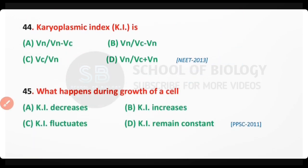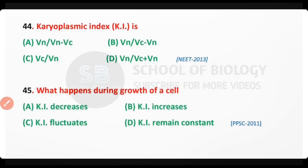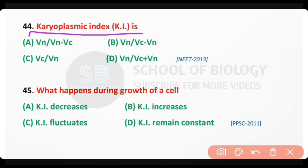Question number 44. The karyoplasmic index, which is the ratio of nucleus size to cell size, has the correct formula as option B: VN over (VC minus VN). This is the karyoplasmic index value.